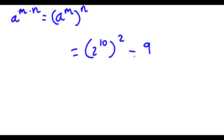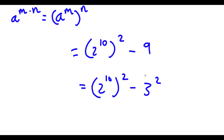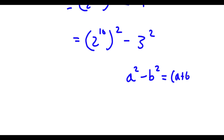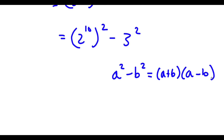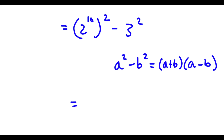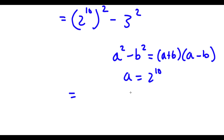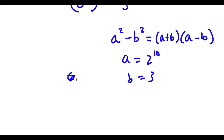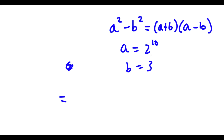Now I have this minus 9. Now 9 I can rewrite as 3 squared, so I have 2 to the power of 10 to the power of 2, minus 3 squared. If I have something in the form a squared minus b squared, this equals (a plus b) times (a minus b). So in this case a equals 2 to the power of 10 and b equals 3, giving me (2^10 + 3) times (2^10 - 3).